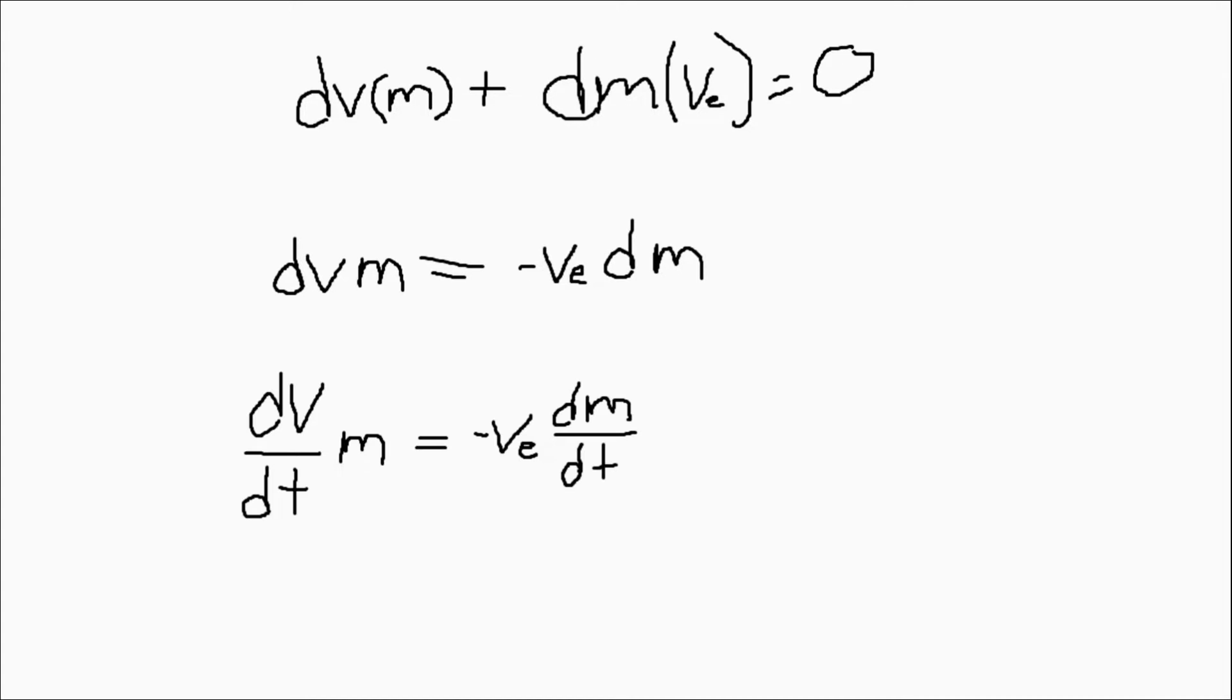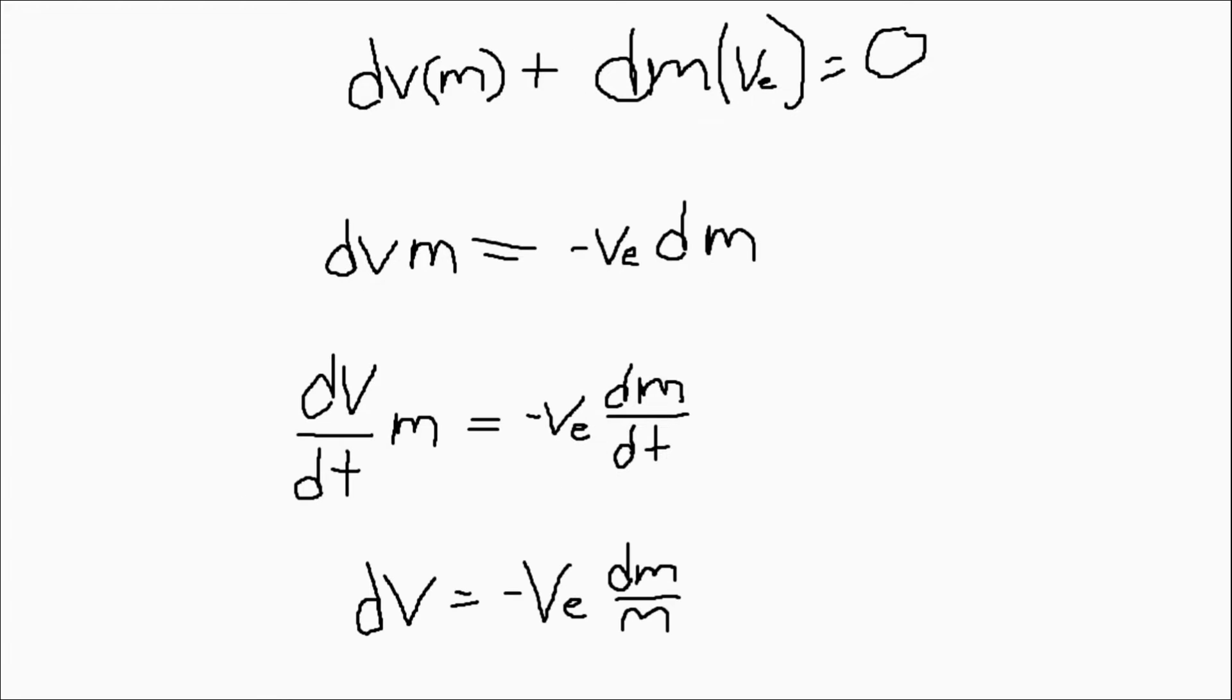The next step is very important. We need to acknowledge that all of this is taking place over a certain amount of time, so we divide both sides of the equation by delta T for a change in time. By doing this, we can then divide both sides by the mass and multiply both sides by the change in time. This gets rid of our delta T values and puts M under dM.